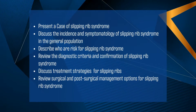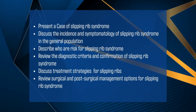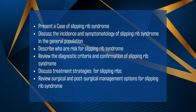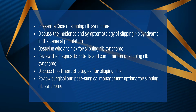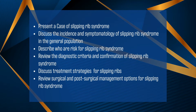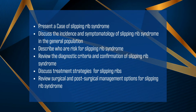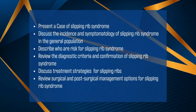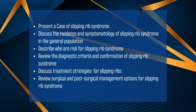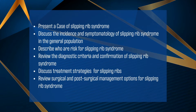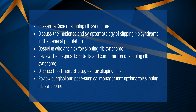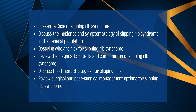Today we will learn about slipping rib syndrome by the presentation of a compelling case, discuss its incidence and symptoms in the general population, identify those at risk, review diagnostic criteria and confirmation methods, explore treatment strategies from conservative to interventional, and explain surgical and post-surgical management options.